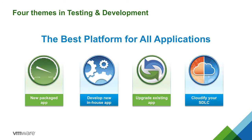We break it down into four themes for our test and development initiatives. First, new packaged applications — today, competitive differentiation for most organizations is being established through software, so the ability to allow your business to try new pieces of software is very important. But that's hard to do if you don't have the capacity or don't know how to plan for it. Second, developing new in-house applications — for custom application development shops, that sandboxing aspect of building new apps quickly is what made the cloud very popular. But how do I do that on top of vCloud Air so I can bring it right back in-house?